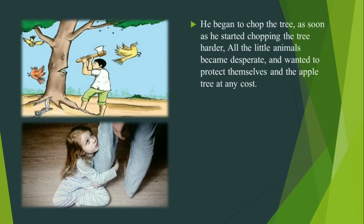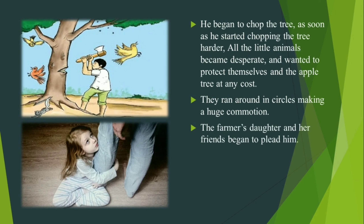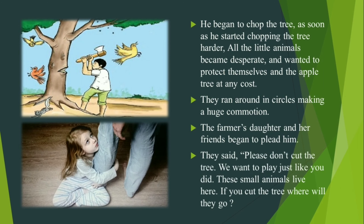He began to chop the tree. As soon as he started chopping the tree harder, all the little animals became desperate and wanted to protect themselves and the apple tree at any cost. They ran around in circles, making a huge commotion.